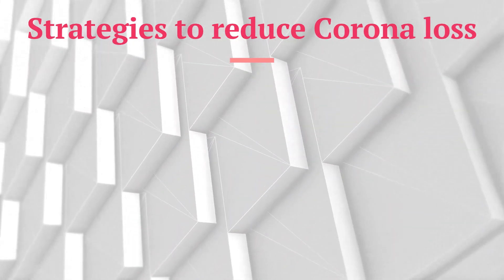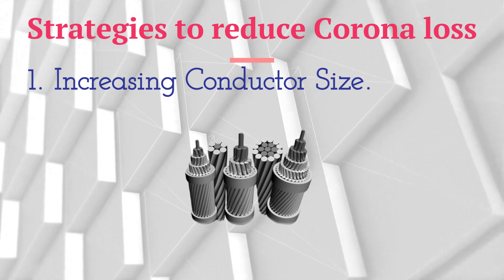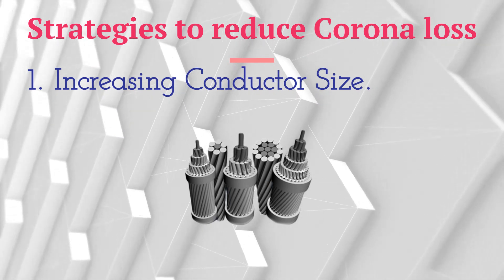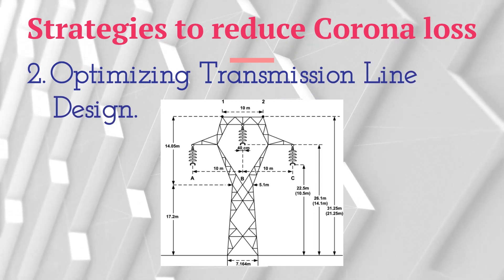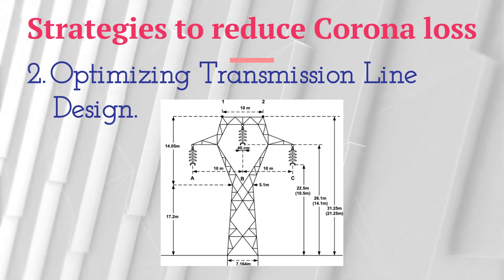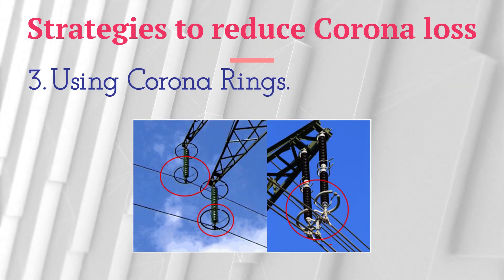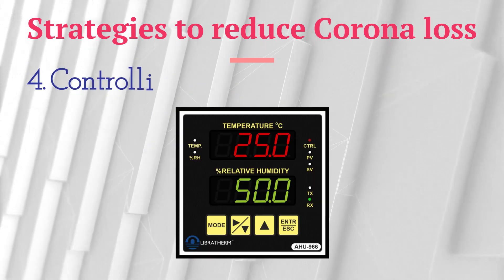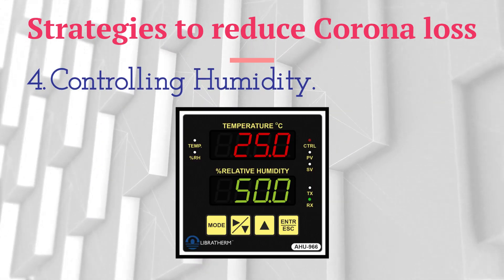The big question is, how can we reduce corona loss? There are several strategies. First, increasing conductor size: one way to reduce corona loss is by increasing the size of the conductors, which lowers the voltage gradient and decreases the chances of corona discharge. Second, optimizing transmission line design: better design and spacing of power lines can also help reduce corona losses, as engineers work to find the sweet spot between efficiency and corona discharge. Third, using corona rings: engineers can install devices called corona rings on high-voltage equipment, which distribute the electric field evenly, reducing the chances of corona discharge. Finally, controlling humidity: weather conditions can affect corona loss, and controlling humidity levels can help mitigate its impact.